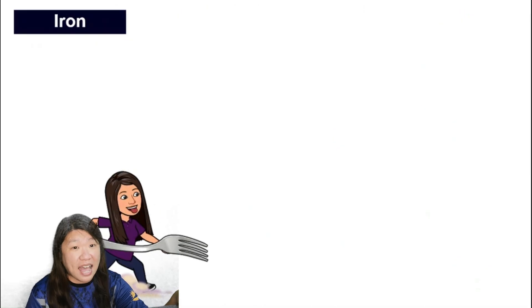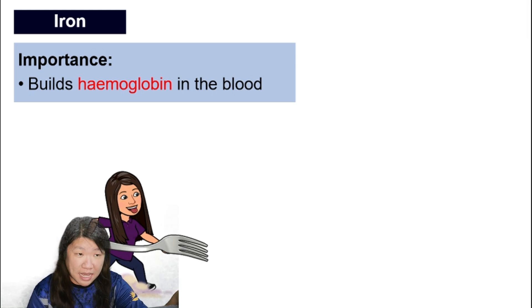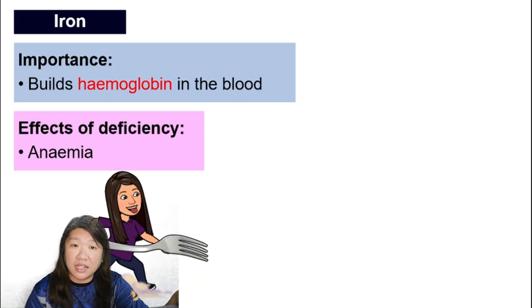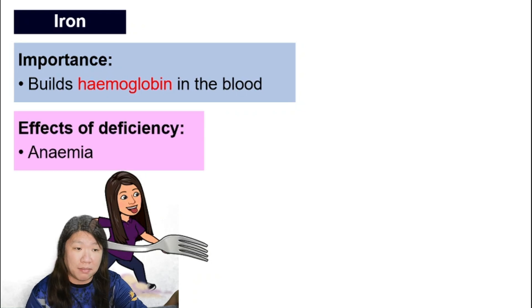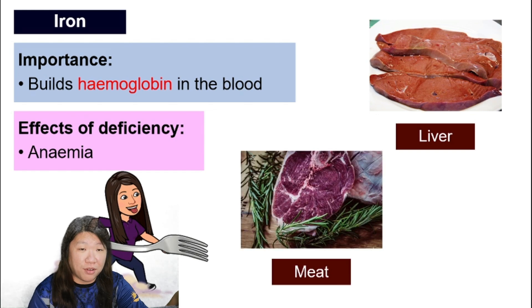Iron is important for building hemoglobin in the blood — that is, the red blood cells. Not having enough iron can cause anemia. We can get iron from liver and meat.